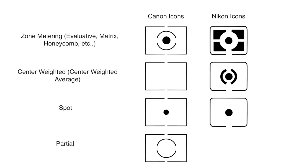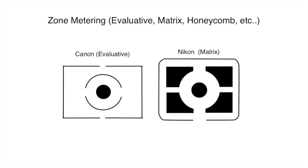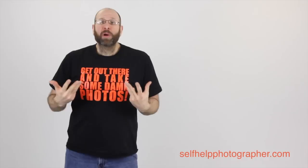Every camera typically has three to four different metering modes, which you can see here with the Canon and Nikon icons for those different metering modes. The metering modes might have different names depending on your camera, but generally speaking from camera to camera the metering modes are all basically the same. We're going to start with the zone metering mode. On Canon cameras zone metering is called evaluative, on Nikon it's called matrix, and on other cameras it might be called honeycomb, multi, or something else. It is typically the default metering mode set at the factory, so if you've never changed the metering mode on your camera, you're probably using zone metering right now.